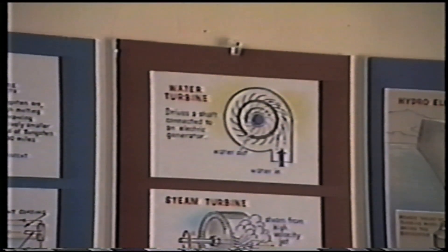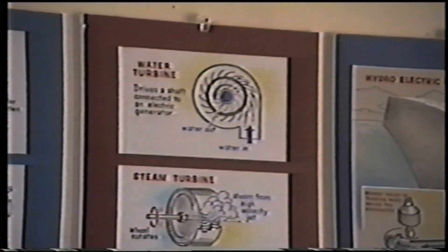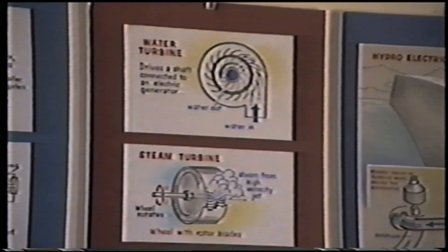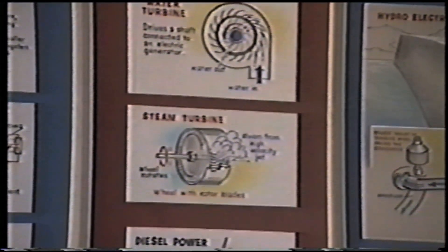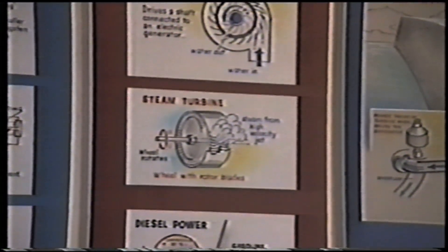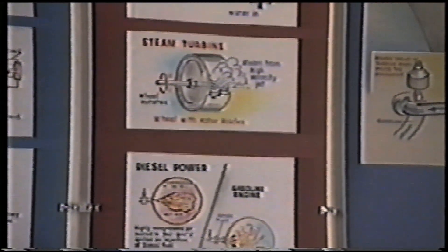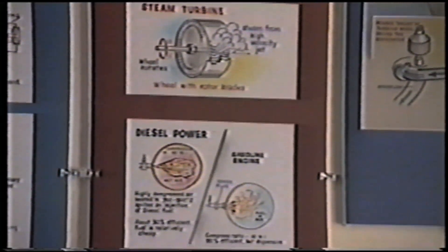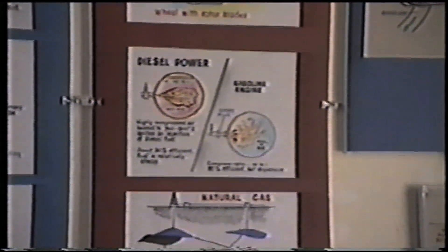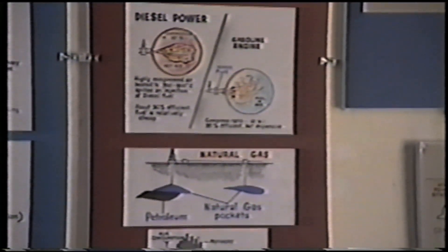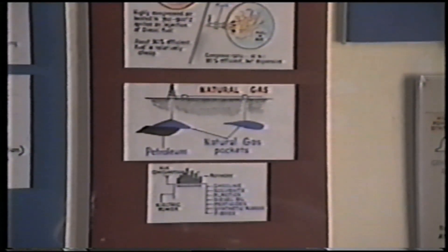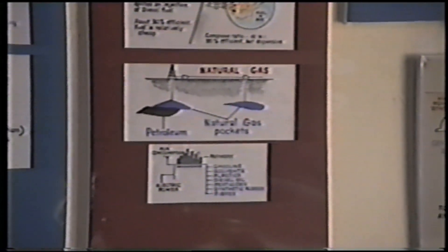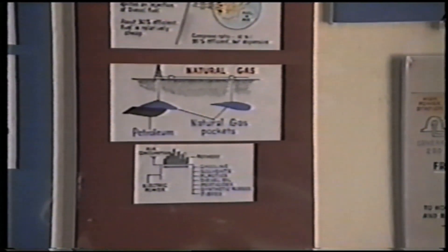There were some reciprocating steam engines, such as used in steam rail engines, but most of these are obsolete now, and gasoline and diesel engines are used extensively for smaller generating stations and portable use. The Vivian diesel generator in the museum is an example of those used in small remote communities.